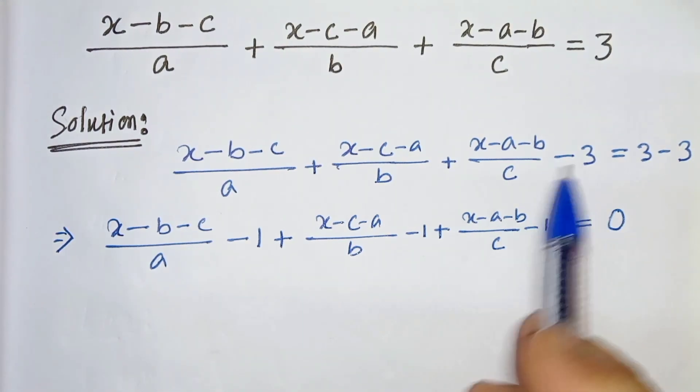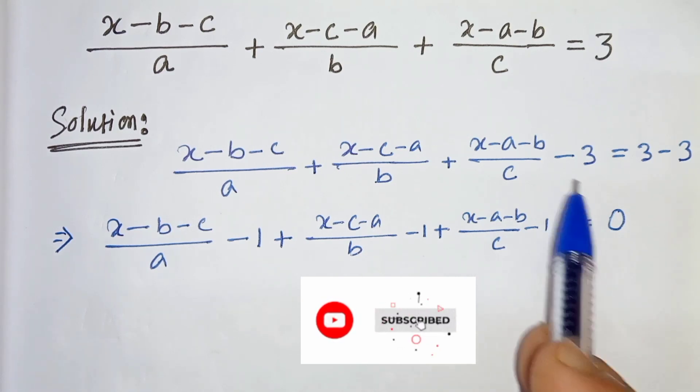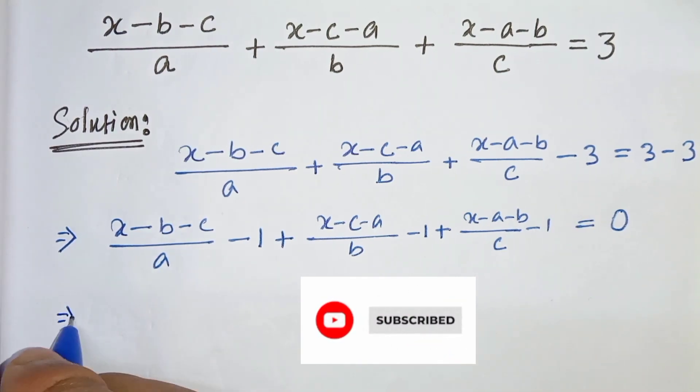We have written minus 3 as minus 1 minus 1 minus 1. 3 times minus 1 that is minus 3. Now we will take LCM.